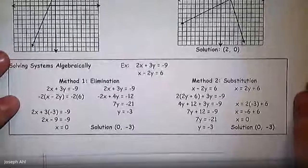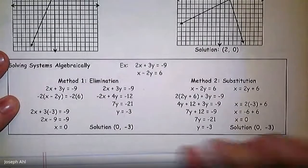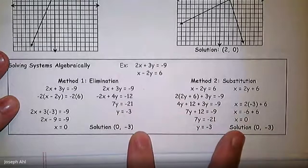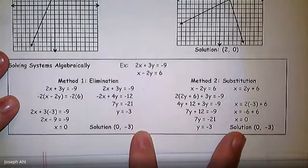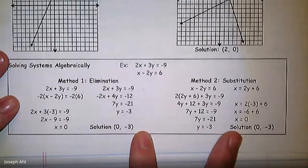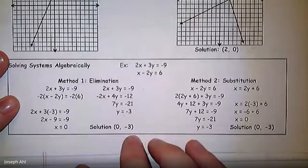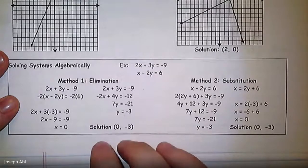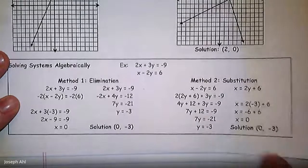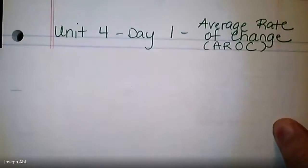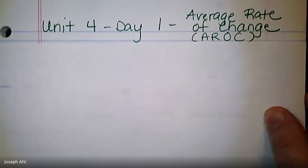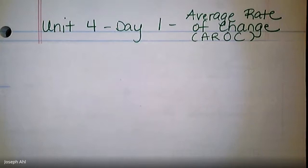We've got elimination and substitution outlined below. No matter which method you choose, notice how we get to the same solution in the end. Take a few minutes, hit pause if you need to, read through page 24, and make sure you feel solid about that information — or circle things you'd like to ask about in class. Now we're going to get into some notes. Our first day of Unit 4 is all about average rate of change, which we'll abbreviate as AROC.